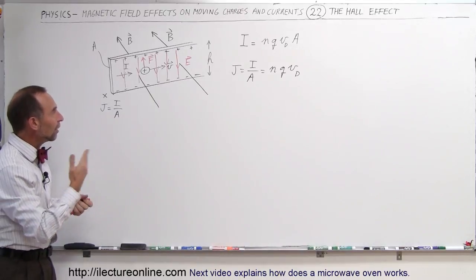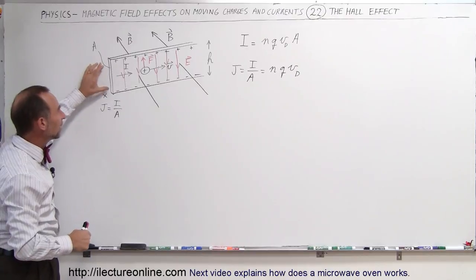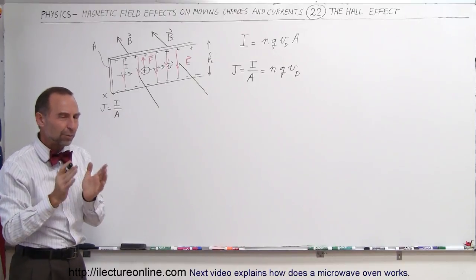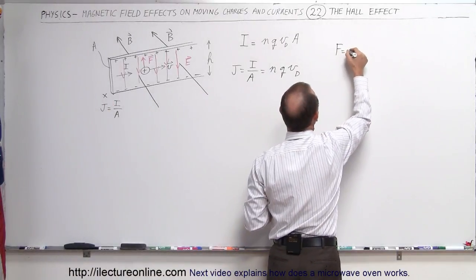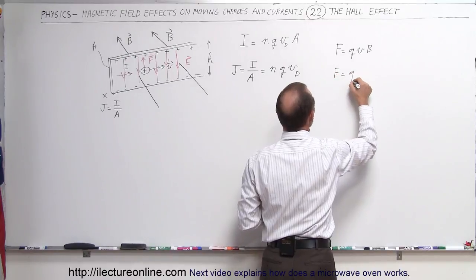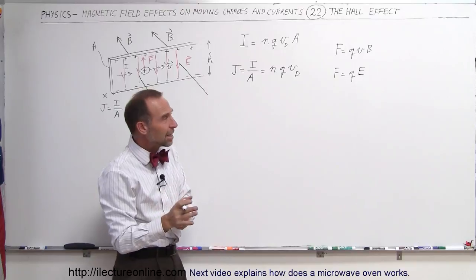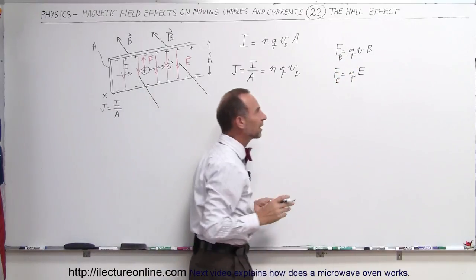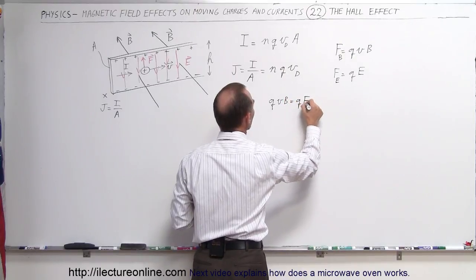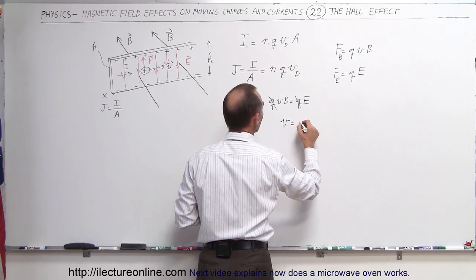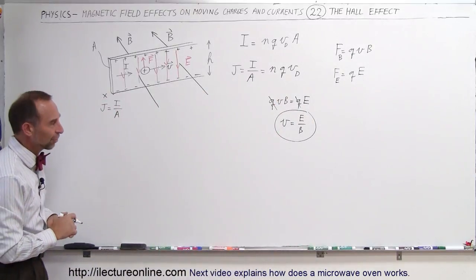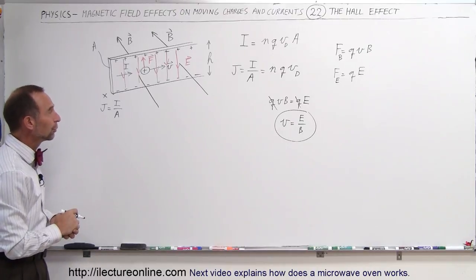What then happens is we can equate the drift velocity to the strength of the electric field and the magnetic field. The force of the magnetic field on a moving charge is F = QVB, and the force caused by an electric field is F = QE. Since those two forces must be equal, QVB = QE. The Q's cancel, giving us that the velocity equals E divided by B — which is the same equation found in a velocity selector. This is the drift velocity of the charges moving through the conductor.